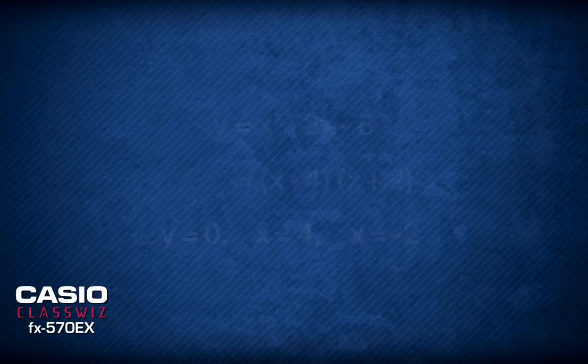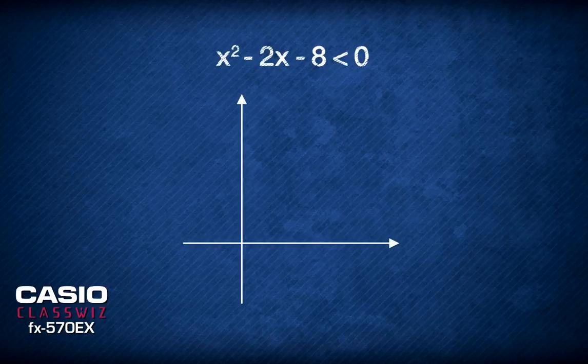Since the coefficient of x squared is positive, we have a quadratic graph with a minimum turning point which can be drawn like this.